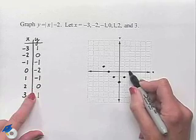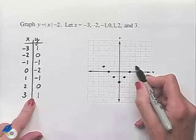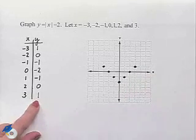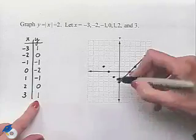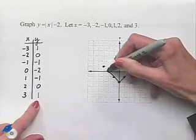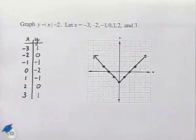2 comma 0, we move two units to the right and we don't move off of the x-axis. 3 comma 1, we move three units to the right and one unit up. And now we're going to simply sketch in the picture that we see by connecting the dots, and we see the characteristic V-shape for this absolute value graph.